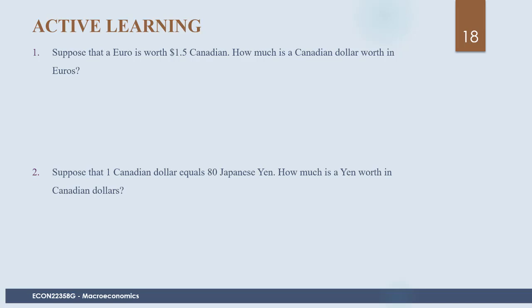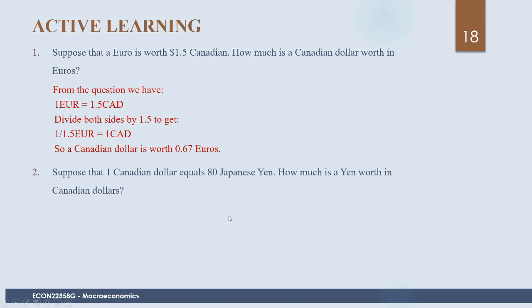Active learning: Suppose a euro is worth 1.5 Canadian dollars. How much is a Canadian dollar worth in euros? We are told one euro equals 1.5 Canadian dollars, and we want one Canadian dollar in euros, so we divide both sides by 1.5. We get 1 ÷ 1.5 = 0.67 euros per Canadian dollar.